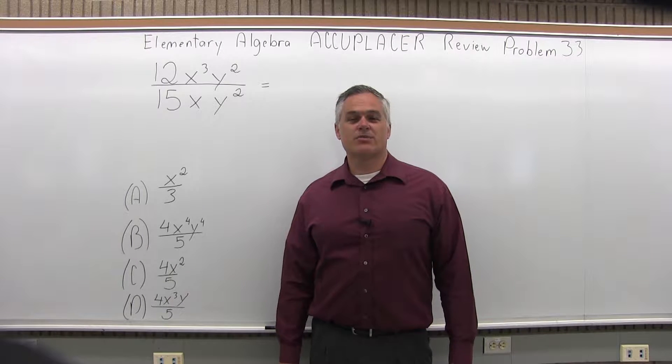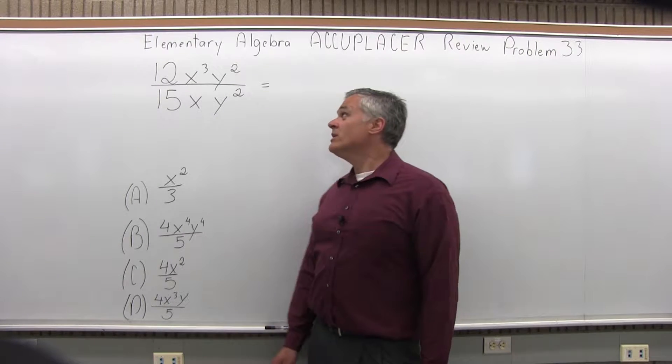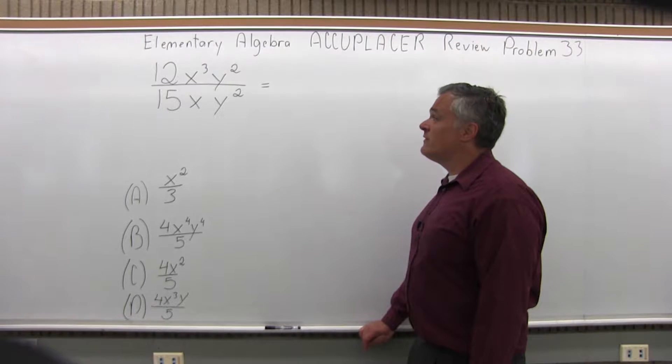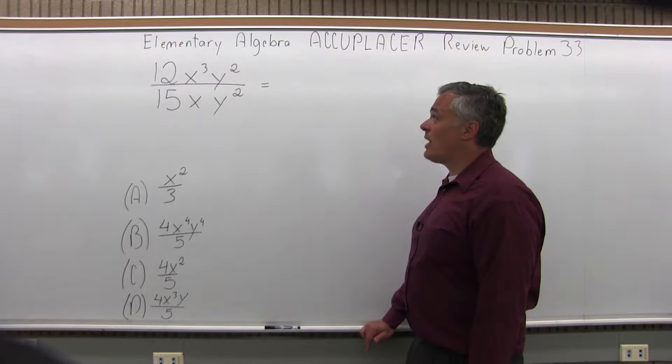This is the Elementary Algebra Accuplacer Review Problem 33. We have 12x to the third, y to the second, over 15x, y to the second.